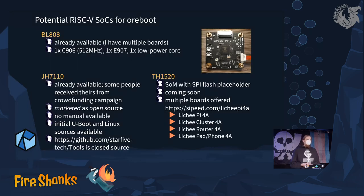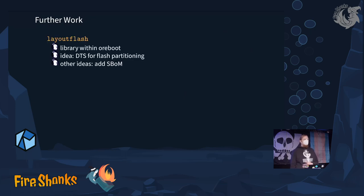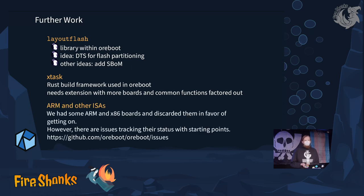I also have a small list of three chips that could be used in the future for ORBoot. The BL808 at the top seems very interesting and I have a bunch of boards for it — it also uses the D1 I already mentioned, though documentation is unfortunately lacking. There is another chip coming soon, the TH1520, which could be very interesting but is not readily available yet. Other work includes a library called LayoutFlash that we would like to revive within ORBoot, the Xtask framework used to build all the code, and it would be really cool to include other processor architectures like ARM.